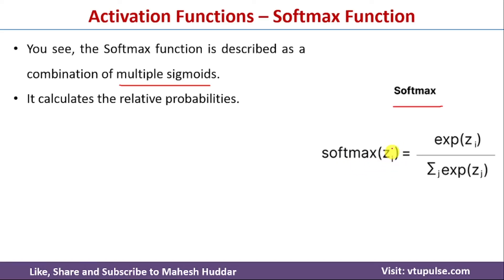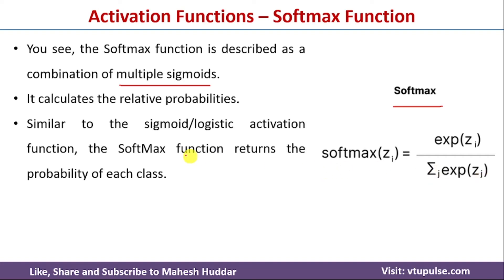Softmax of z_i, where z_i is one sigmoid activation function at a particular neuron, is equal to exp(z_i) divided by the summation of exp(z_j) over all j — where all j refers to all sigmoid neurons in the network. For example, if you have two sigmoids, it is the summation over the first neuron and the second neuron and so on.